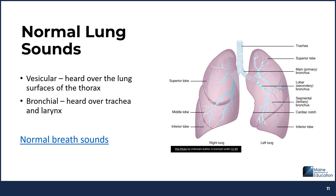When listening to the lungs, normal breath sounds depend on where they occur. Listen to one full cycle of inspiration and expiration in all chest areas, comparing side to side, both anterior and posterior. Vesicular breath sounds are normal — low-pitched, soft, and heard during both inspiration and expiration. Bronchial breath sounds are normal when heard over the trachea and larynx, but would not be normal over the lung fields, as this could indicate consolidation. A link is provided below to hear normal breath sounds.